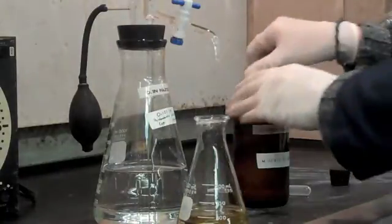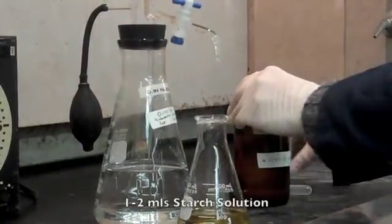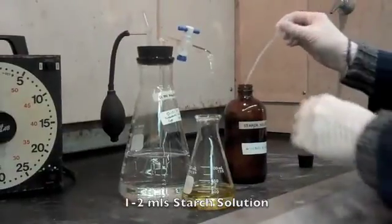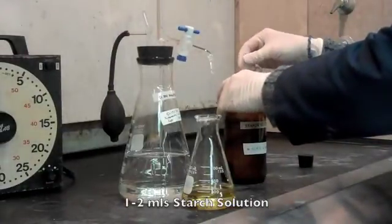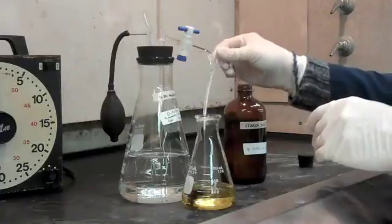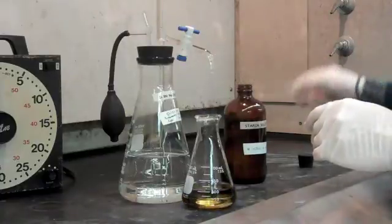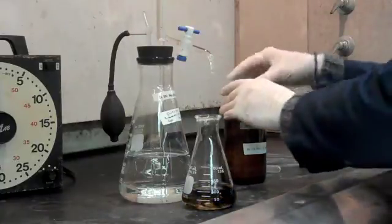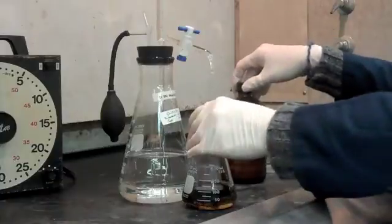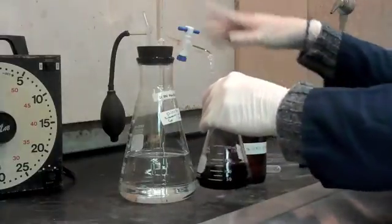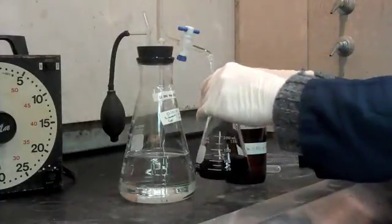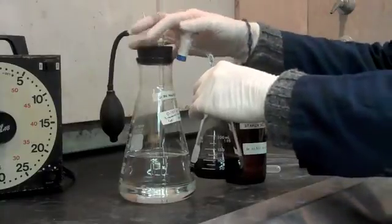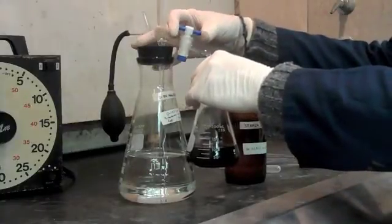For the second part of this titration, we are going to add 1 to 2ml of 1% starch solution. And in the presence of iodine, the starch iodine will form a dark blue color. And this is our indicator. So we're now going to continue the titration. We're not going to re-zero the burette. And now we're going to go drop-wise until this dark blue color disappears.